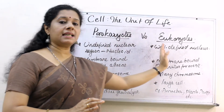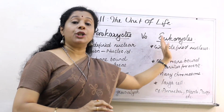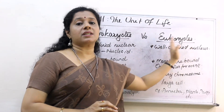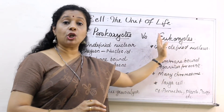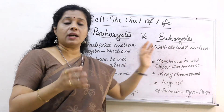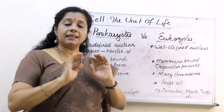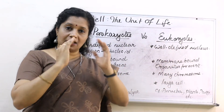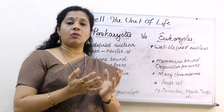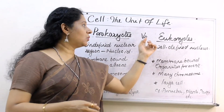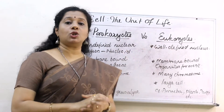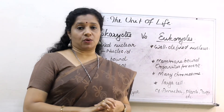From prokaryotes, eukaryotes later evolved. 'Karyo' again means nucleus, and 'eu' means true. Later, the nucleus developed a membrane around it to define its functions, and that developed into the eukaryote.